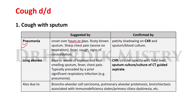Pneumonia is suggested by onset over hours or days, with characteristic rusty-brown sputum, sharp chest pain worse on inspiration, fever, and signs of consolidation in the lungs. It is confirmed by patchy shadowing on chest X-ray and positive sputum or blood culture. In lung abscess, there is copious and foul-smelling sputum lasting for days or weeks, with fever and chest pain, typically preceded by a prior significant respiratory infection such as pneumonia. It is confirmed by circular opacity with fluid level on chest X-ray and positive sputum culture.